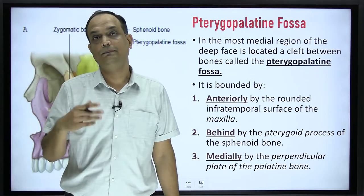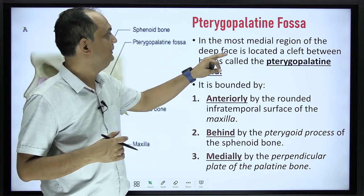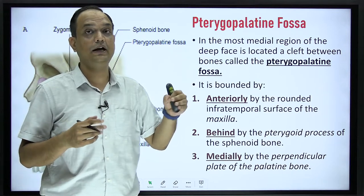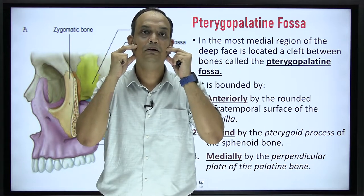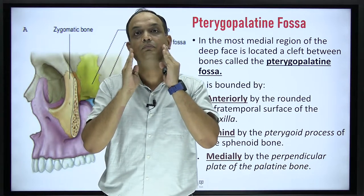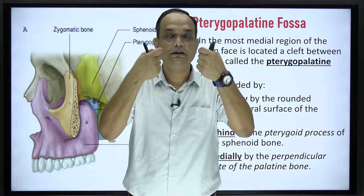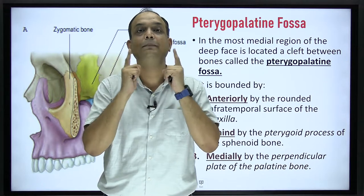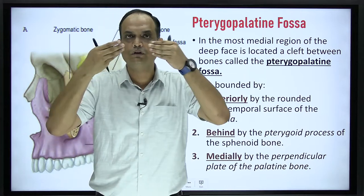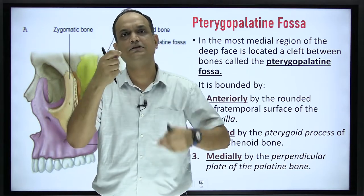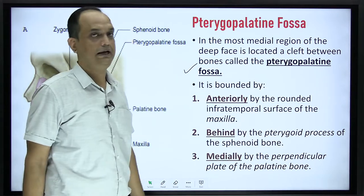When you consider the pterygopalatine part, you should always have an idea about the pterygopalatine fossa. It is located in the most medial region of the deep face. We have already cut the mandible and removed the lateral pterygoid muscle. When you see the pterygoid plates, the pterygoid plates have a small gap on the anterior aspect and that is known as the pterygomaxillary fissure. Through that fissure, more medially you will find a small deeply placed fossa, and that is known as the pterygopalatine fossa.